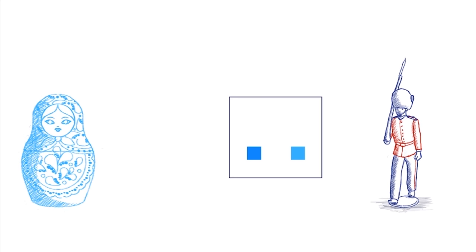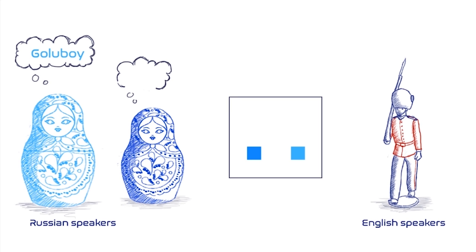This example is a part of an experiment that studied the difference between English and Russian native speakers' perception of the blue color spectrum. Unlike English, Russian makes an obligatory distinction between light blue, goluboy and dark blue siniy. This raised the question whether this linguistic difference leads to differences in color discrimination. English and Russian speakers were tested in a color discrimination task in which 20 color stimuli from the Russian siniy-goluboy spectrum were used.